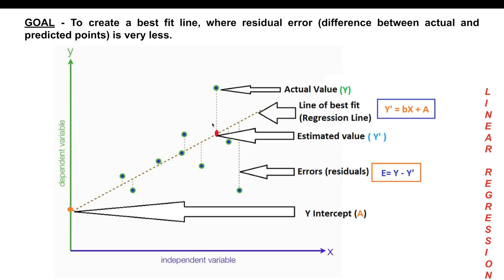This difference between the actual value and the estimated value is called the residual error. Your model may not be 100% accurate in most cases. All the green dots are actual values, and all estimated values lie on the dotted line. This difference is the residual error, and your goal when creating the best fit line should always be to minimize this error — the lesser the error, the more accurate your output will be.